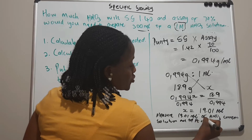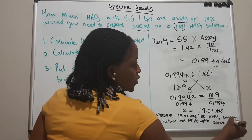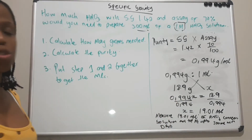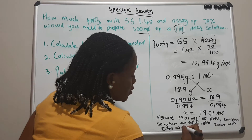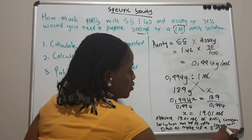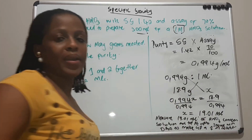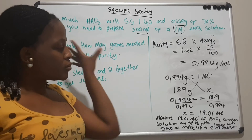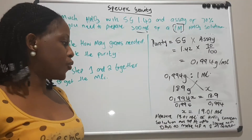So to write your final statement: you will measure 19.01 mL of the concentrated nitric acid solution and top it up to 300 mL with distilled water to make up a 1 molar solution. And voilà — we have prepared a 1 molar solution of nitric acid.